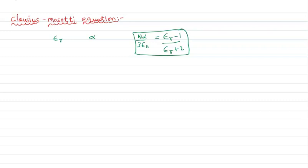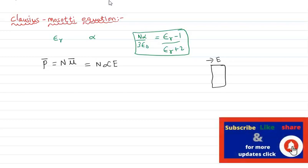When we place a dielectric material in an electric field, polarization occurs. The polarization vector P-bar equals N into mu-bar, where N is the number of atoms present in the dielectric material and mu-bar is the average dipole moment. The average dipole moment is directly proportional to the applied electric field, related through the polarizability alpha.